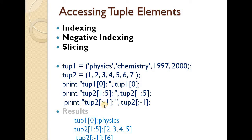For negative indexing, tuple2 = -1 accesses the element from the back end of the tuple. Negative index -1 refers to the last element. We can print the result. These three methods — indexing, negative indexing, and slicing — are all used.